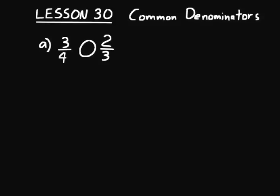What we want to do here to compare these fractions is have common denominators, because it doesn't make much sense to compare 3/4 and 2/3 directly. We need to make an equivalent fraction of 3/4 and an equivalent fraction of 2/3 where they both have the same denominator — they could both have a denominator of 12. If we take 3/4 and multiply it by 3/3, and 2/3 by 4/4: 3/4 × 3/3 = 9/12, and 2/3 × 4/4 = 8/12. Now we can easily see 9 is greater than 8, so 9/12 is greater than 8/12.